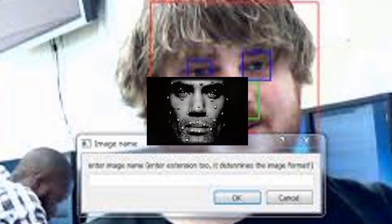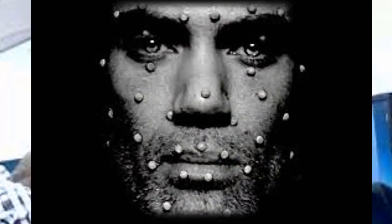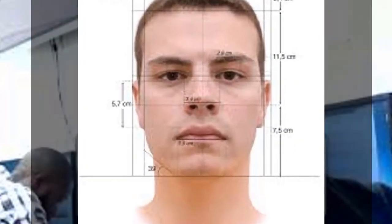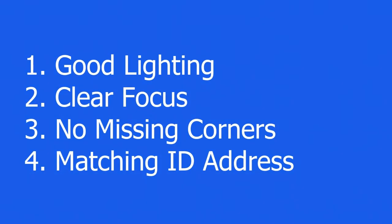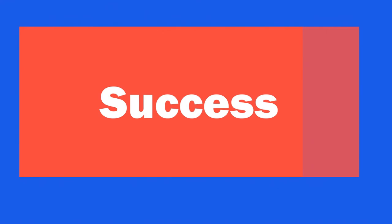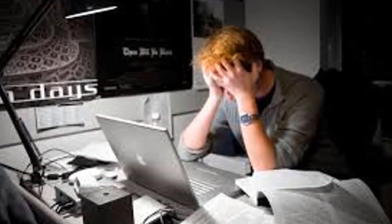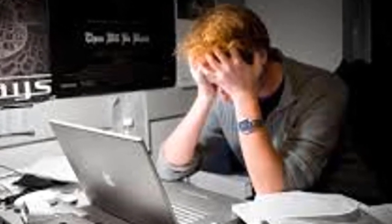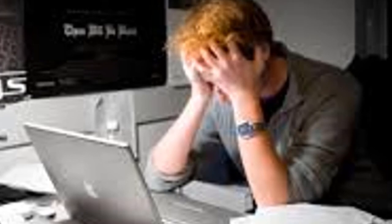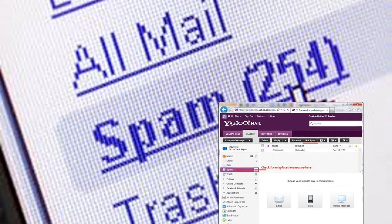Uphold uses a third-party vendor facial recognition software for the first attempt at passing KYC and becoming verified. If you do everything correctly — good lighting, clear focus, no corners cropped off, and a correct matching address with your ID — you will likely succeed on your first attempt. If you fail this first try, you will have to wait around three days to receive an email and have your account reset to try again. Remember to check your spam folder for the reply email, as it often ends up there.